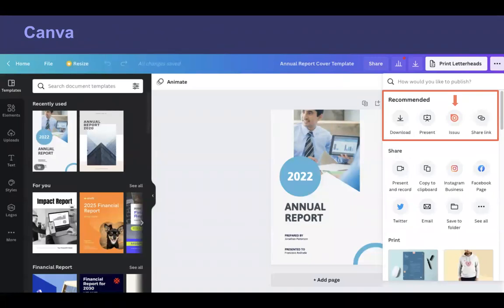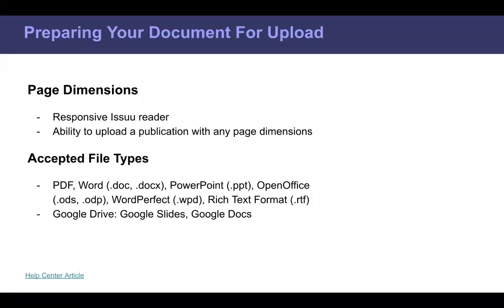You can also use Canva — we have an integration with Canva so you can easily create the PDF and then send the publication straight to Issuu without needing to download it to your own device. These are the ways to create your content. If InDesign is too complex for you, I'd suggest using either our own templates or Canva, which has hundreds of templates for anything you need to create.